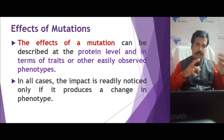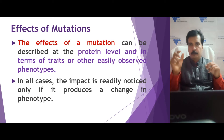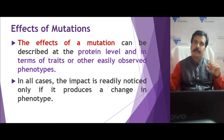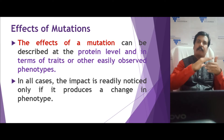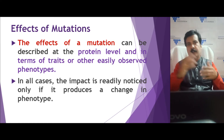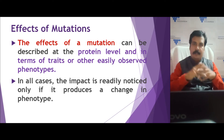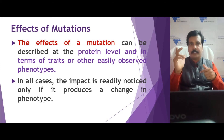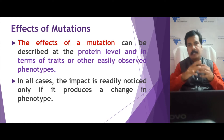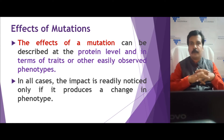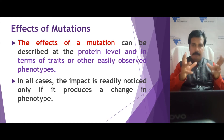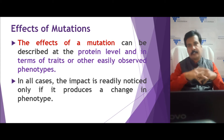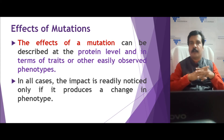This process of conversion of DNA to protein is called translation, and every triplet codon codes for a particular amino acid. There are 20 amino acids and four nucleotides. These four nucleotides, through permutation and combination, have been identified as forming triplet codons.